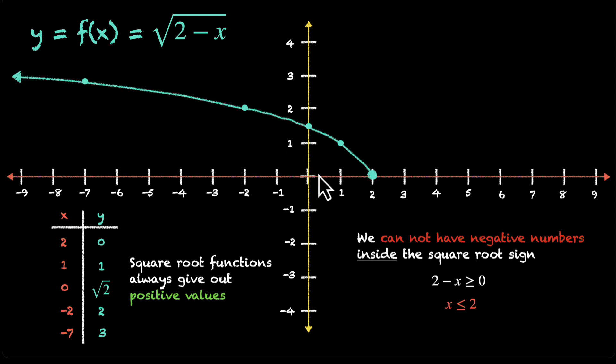So if we try joining these, this is what we'll get. The graph starts with 2, rises and then goes in this direction. This is the graph of square root of 2 minus x. Or we can say that this is a rough graph of square root of 2 minus x. Now looking at this graph, can we figure out what the domain and range of this function is?